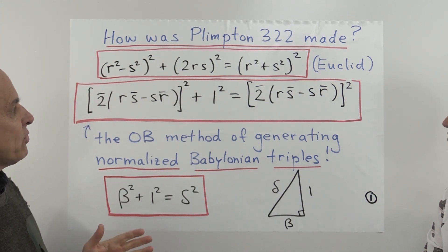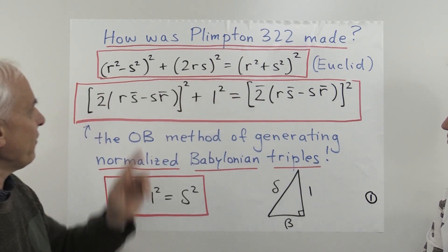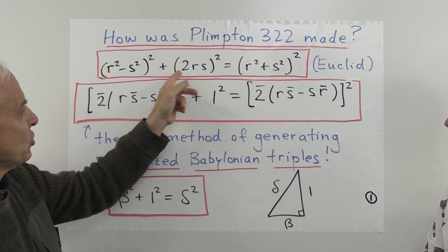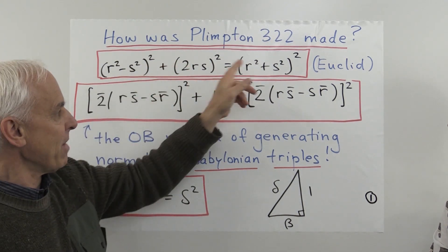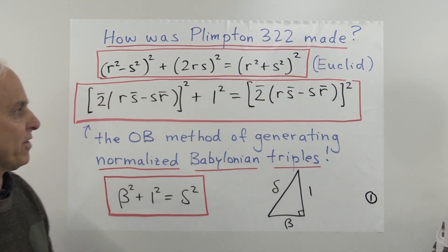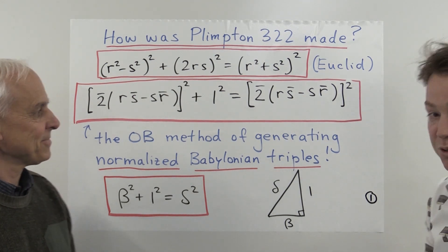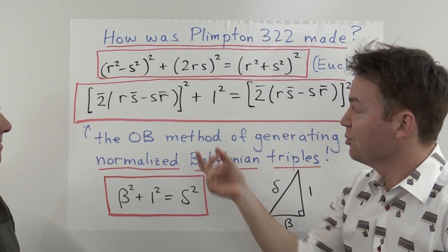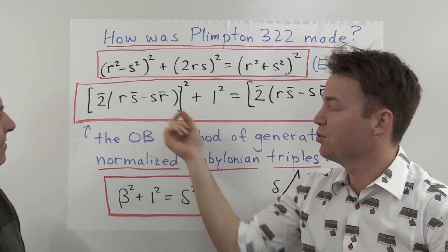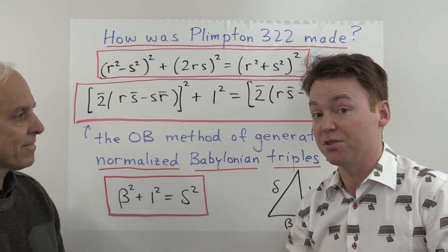These days we all know that Pythagorean triples are usually associated with this equation involving three quantities: r squared minus s squared, 2rs, and r squared plus s squared. If you square this one and you square this one and add them up, you get the square of that one. So that's a Pythagorean triple in the usual sense and it goes back to Euclid. But the old Babylonians had a quite different approach.